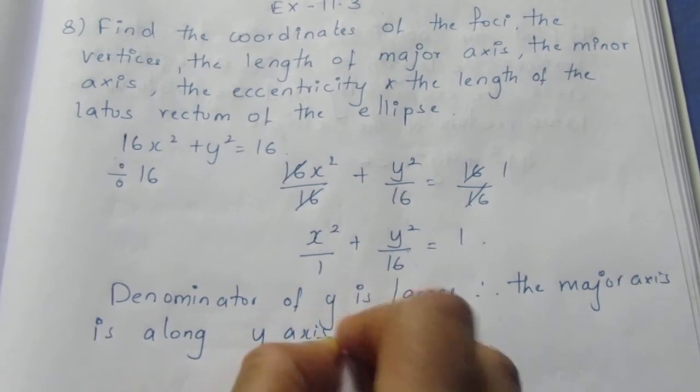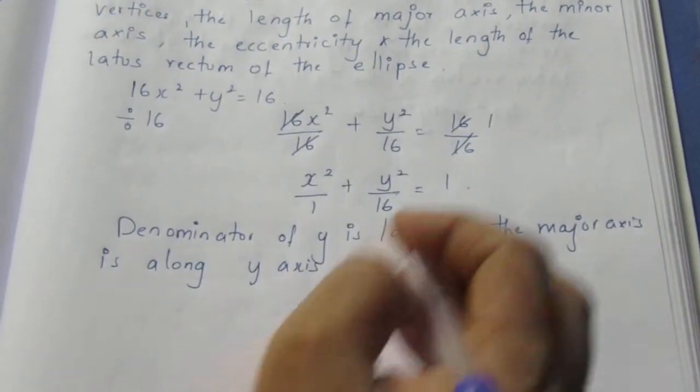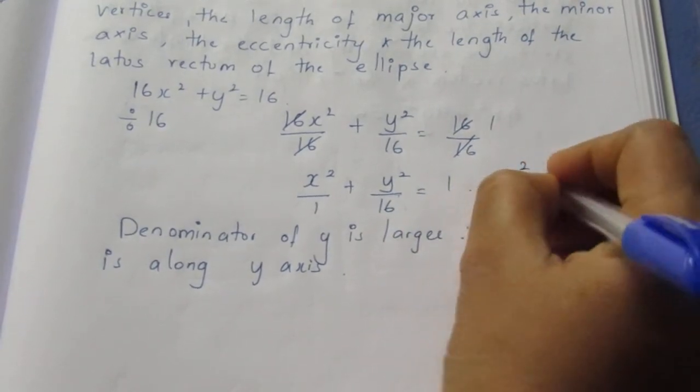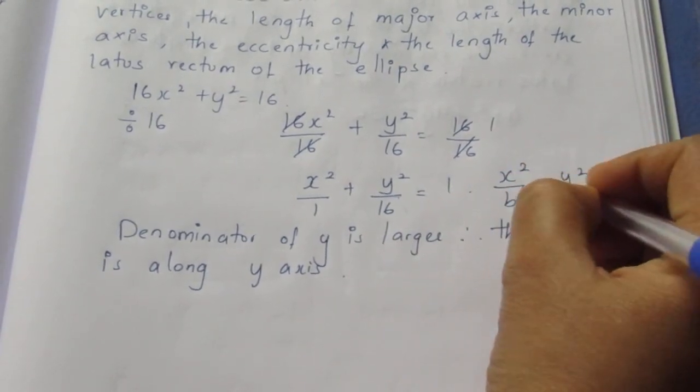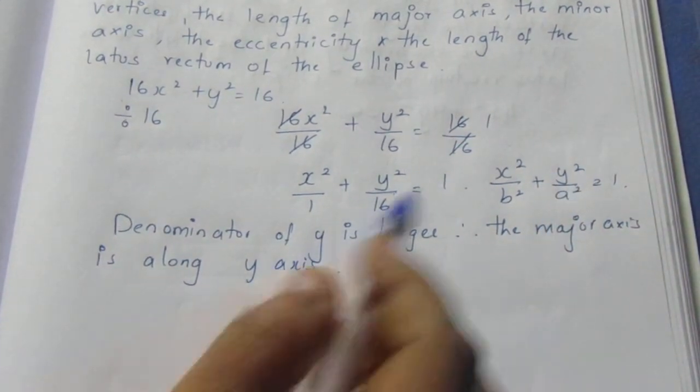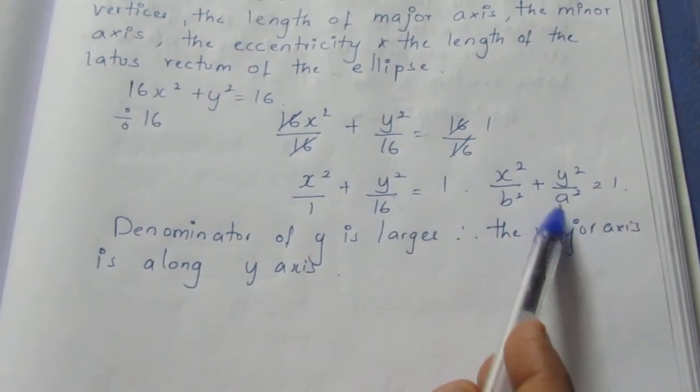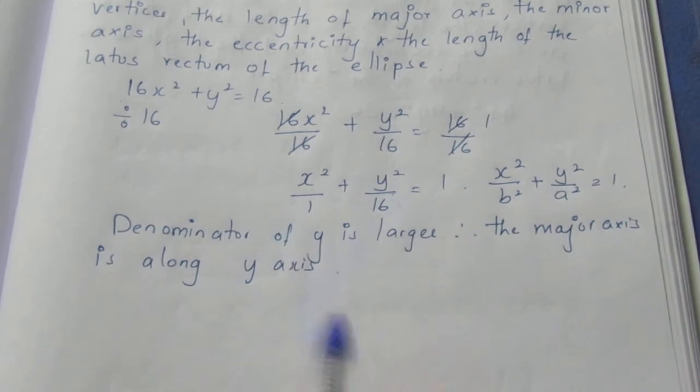Now we found that the major axis is along y axis. Therefore we can compare this equation as x²/b² + y²/a² = 1. Here y² is the a² value. Comparing these two equations we can write a² = 16 and b² = 1.